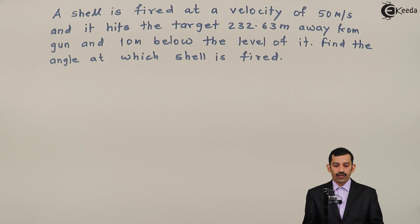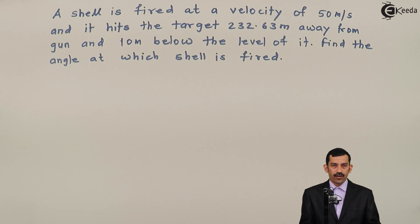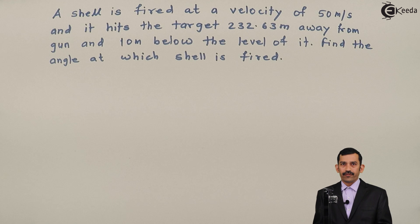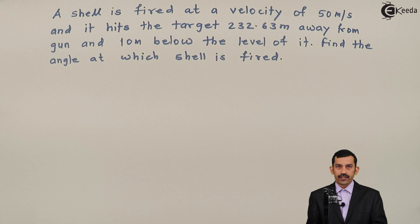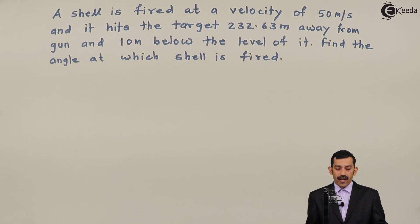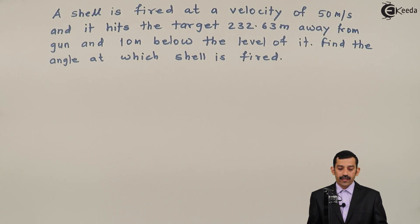Hi friends, we will solve some problems on projectile motion. A shell is fired at a velocity of 50 meters per second and it hits the target 232.63 meters away from the gun and 10 meters below the level of it. Find the angle at which the shell is fired.